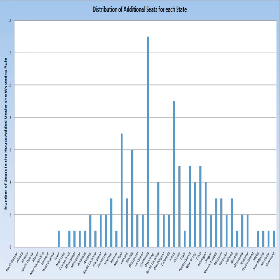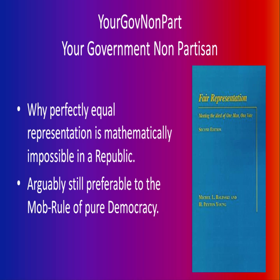The reason this happens is that states like California, Texas, and New York are underrepresented in the sense that they have a very high number of constituents per representative — so they would be the states most likely to gain seats. As was shown by Balinski and Young in their book — well worth the read — it is mathematically impossible in a republic versus a democracy to completely flatten out this curve of representation disparity.